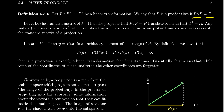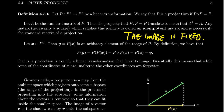One other way of saying it is that if you are in the image of the linear transformation, you are fixed. So the image, or the range, of the linear transformation is fixed — it's unmoved by this transformation. This is what we call a projection.